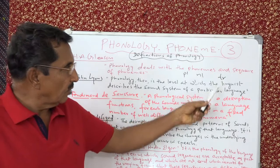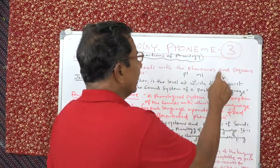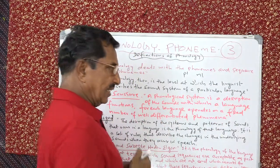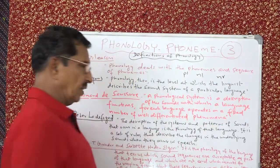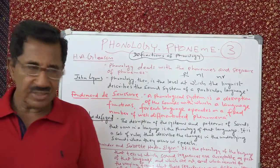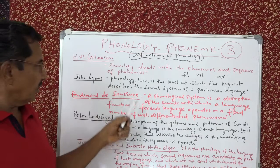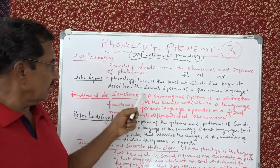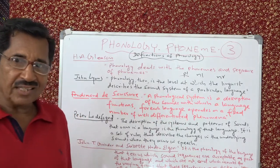D-R is allowed — 'tri' is allowed — but N-R and N-L and so on are not. P-L is allowed. Sequence means one coming after the other. The second definition is from John Lyons: phonology is the level at which the linguist describes the sound system of a particular language — that is, language-specific.